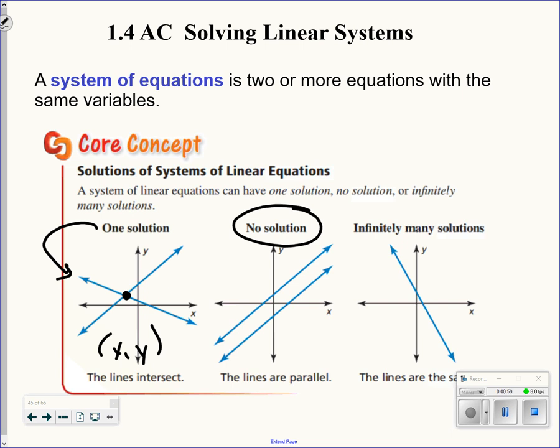What happens if I have two lines that end up actually being the exact same line? Then you would say infinitely many solutions. I will let you abbreviate that to IMS. I'm going to let you abbreviate no solution to a circle with a line through.